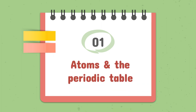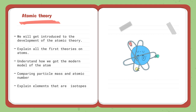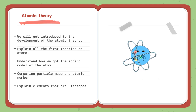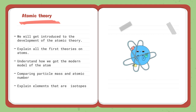The first lesson of Topic 1 is atomic theory. We will get introduced to the development of the atomic theory, starting with the first theories of the atom, including Rutherford's model, Thompson's model, and the cloud model, up until we reach the modern model of the atom. We will also learn about particle mass, atomic numbers with examples of elements, and isotopes, which are defined by having a different number of neutrons but belonging to the same element.